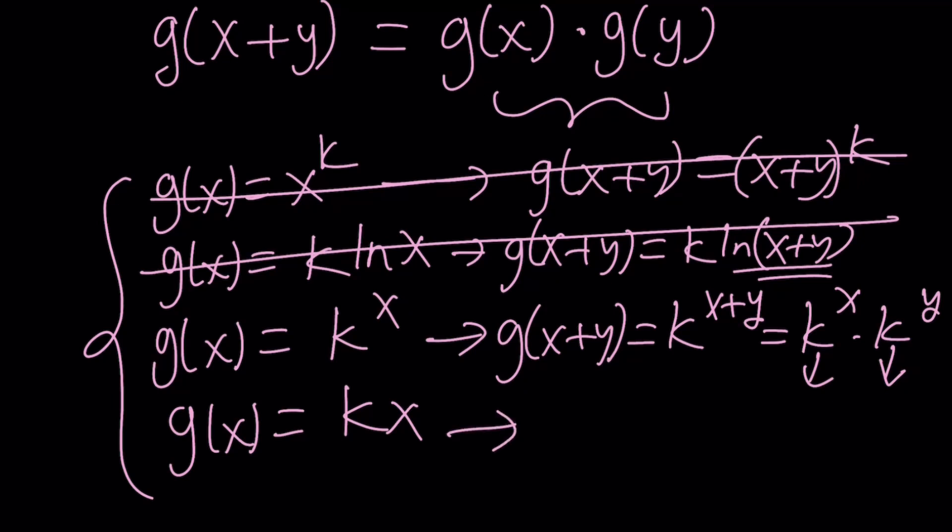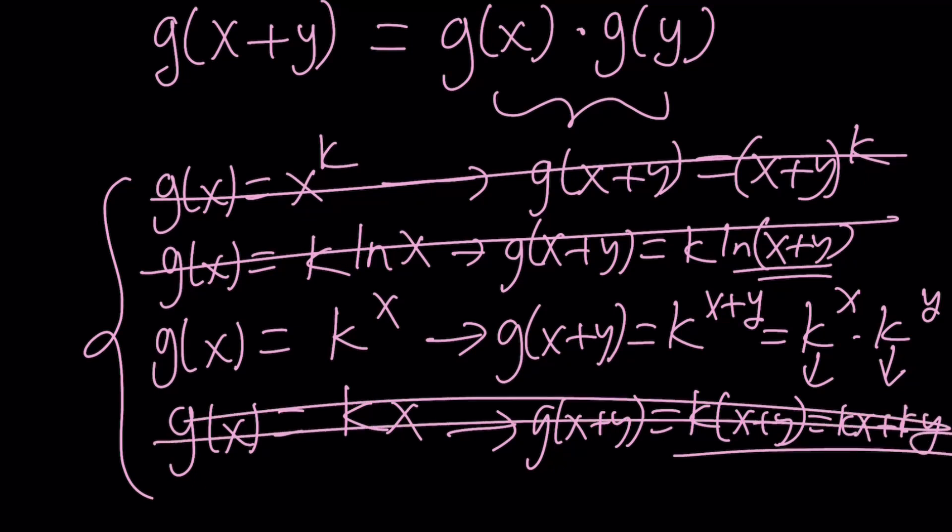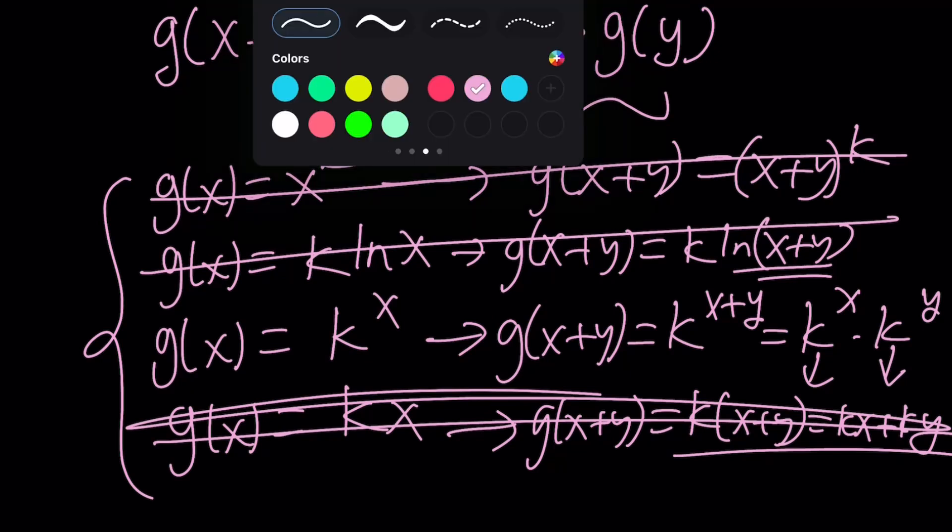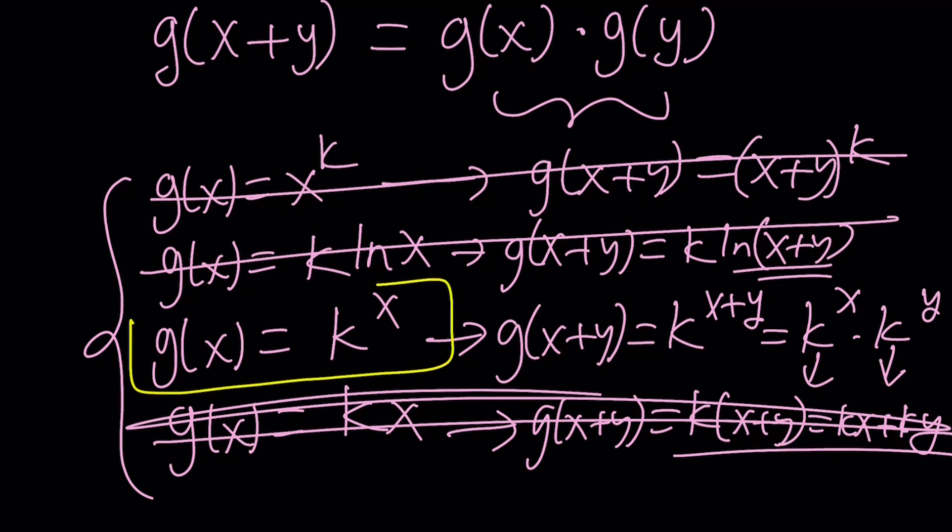And if you try this, you're going to notice that g of x plus y is going to be kx plus y. And that is kx plus ky. This is actually the breakdown for the plus to plus. This doesn't work either. And our solution is going to be the third one, which is this. So that's the solution. k is arbitrary.